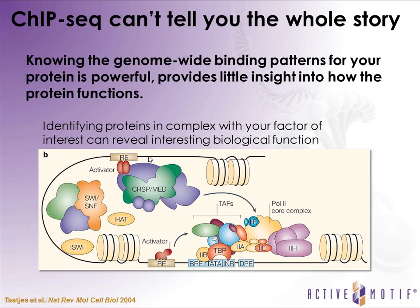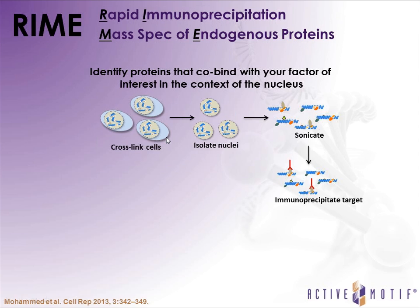So far I've addressed several different ChIP technologies that tell you a lot about where your transcription factor or histone modifications are distributed across the genome. But this doesn't tell you everything about the way our genome acts to regulate gene expression. One of the things we've been pushing for at Active Motif is the identification of protein complexes that are associated with a transcription factor of interest.